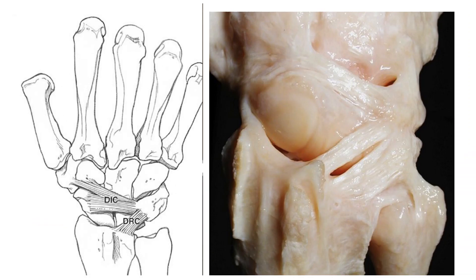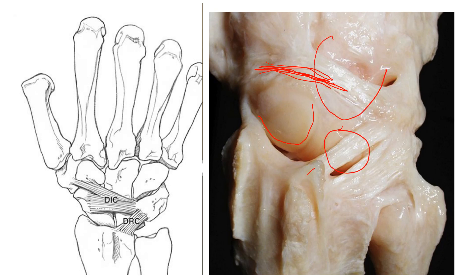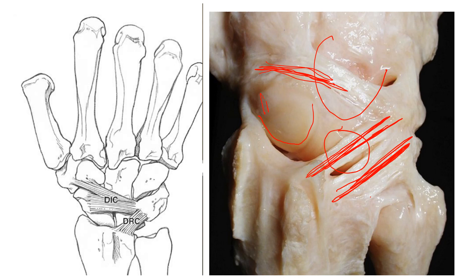In this slide you can clearly see the dorsal intercarpal ligaments, which are between the carpus. This is the scaphoid, this is the lunate, and this is the capitate. Here we see the dorsal lunotriquetral ligament, and here we see the radiotriquetral ligaments, which are extrinsic ligaments, and these are intrinsic ligaments.